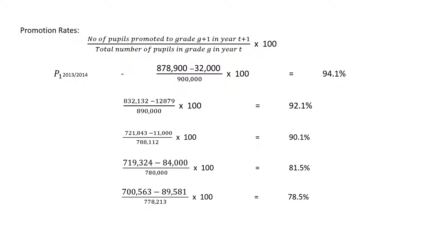The area that normally presents a challenge is when you get to the last level. When you get to the last level, remember we have been told the total number that graduated. So you base the total number that graduated over the total enrollment for primary 6, which is the last grade, and multiply by 100. You're going to see that 545,013 graduated, so over the total enrollment for primary 6 times 100, that gives you 17.8%. This is the promotion rate, which will be used for other calculations later.